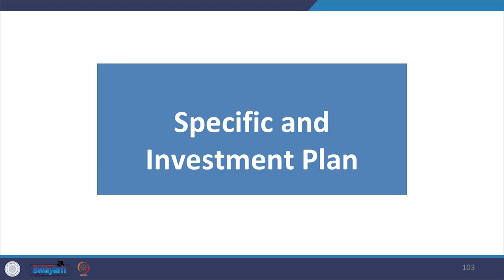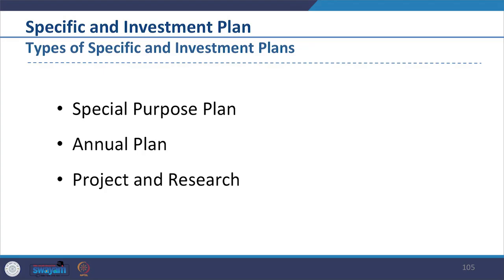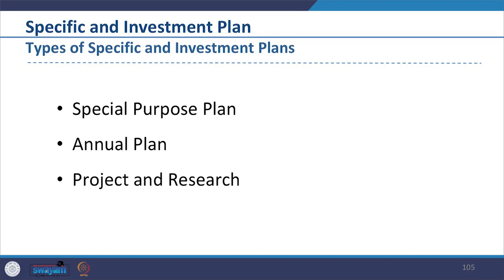So we saw different types of local area plans. So far we have seen the purpose and case examples of different core plans. Now let us look at the purpose of specific and investment plans. There are three types: special purpose plan, annual plan and project and research.